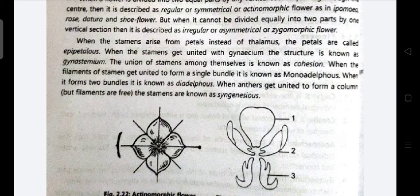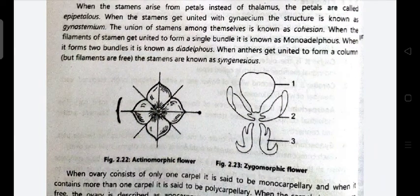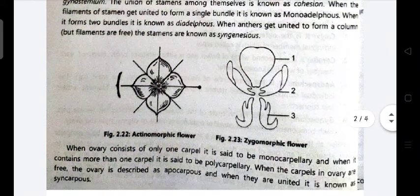When stamens unite with the gynoecium, the structure is known as a gynostemium. The union of stamens among themselves is known as cohesion. When the filaments of stamens unite to form a single bundle, it is called monadelphous. When they form two bundles, it is called diadelphous. When anthers unite to form a column, the stamens are called syngenesious.